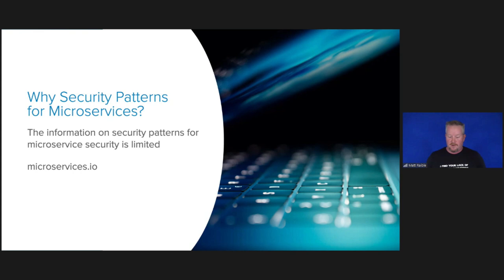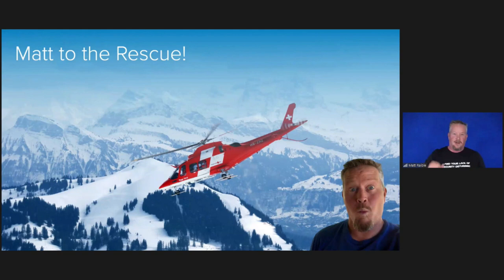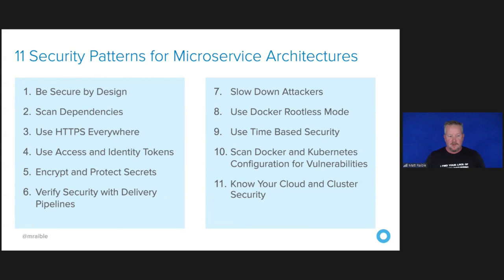So I decided I would come to the rescue and give you 11 different patterns for microservices security. One is to be secure by design. Two is to scan your dependencies. Three, HTTPS. We're also going to talk about OAuth and OpenID Connect, how to protect your secrets, verifying security, and then we'll get into containers with Docker, using time-based security, Kubernetes, and your cluster security.